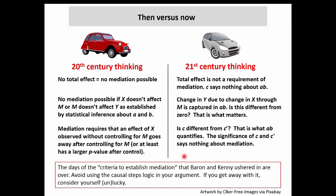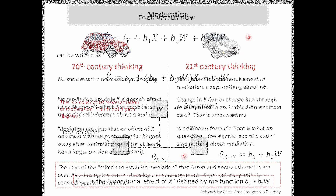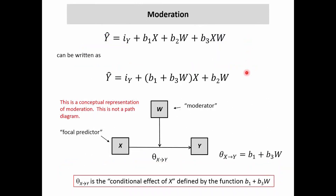Let's represent this model in graphical form and introduce some notation I'll be using regularly throughout the next several modules and into the section on conditional process analysis. So here's where we are: we have a model that includes X, W, and the product of X and W. We know that model allows X's effect to be a linear function of W.